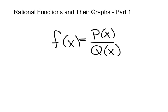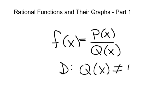A rational function, as opposed to the reciprocal functions we've already talked about, is a ratio of two polynomials. We often write this as f(x) = p(x) over q(x), where p(x) and q(x) are different polynomials. The domain of f(x) is all real numbers except for anything that makes the denominator zero — the denominator of a fraction cannot be zero ever.